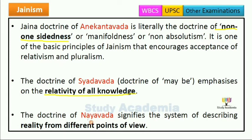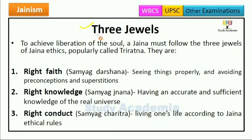The doctrine of Nayavada signifies the system of describing reality from different points of view — yeh mainly reality ko different point of view se dekhne ke liye utsahit karta hai. Next are the Three Jewels. To achieve liberation of soul, a Jaina must follow the three jewels of Jaina ethics, popularly called Triratna. The three jewels are: right faith, right knowledge, and right conduct.